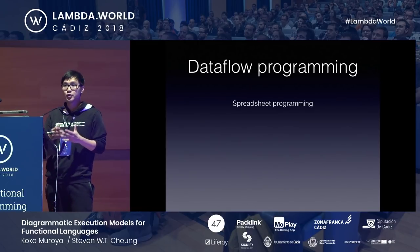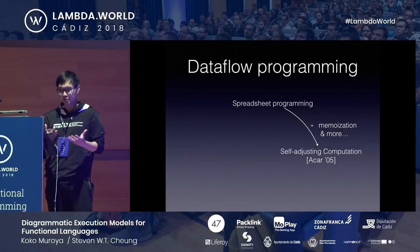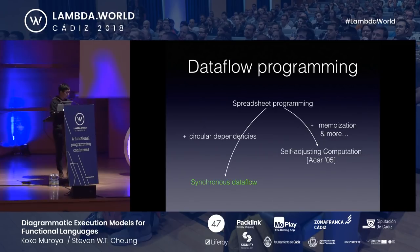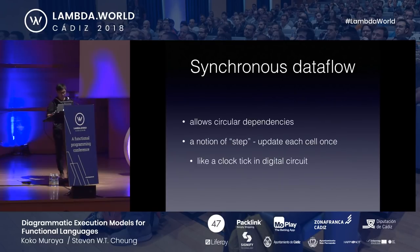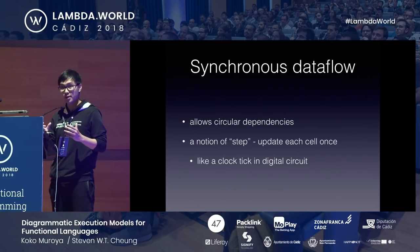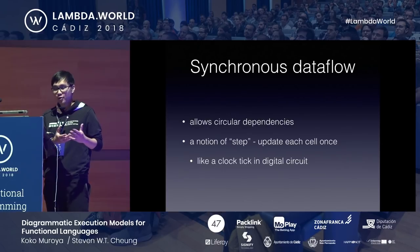This kind of spreadsheet programming is very useful in practice. Adding dynamism, memoization, and more infrastructure enables self-adjusting computation. We add circular dependencies into the spreadsheet programming — calling it synchronous data flow. Adding circular dependencies is tricky: the stabilize function would go into an infinite loop. For example, x and m depend on each other, causing an infinite propagation loop. So we abandon one-big-step stabilization and introduce small-step propagation: in each step, update every cell at most once. Like digital circuits: cells are flip-flops, and a step is a clock tick.